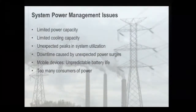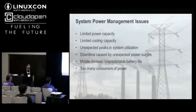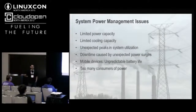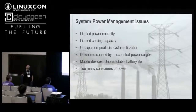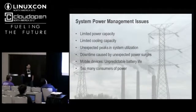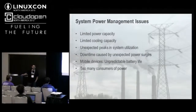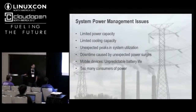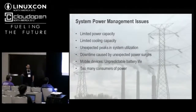So what are the system power management issues in general? We have limited power capacity and limited cooling capacity — both limited by financial or physical constraints. Systems can have unexpected power peaks and swings that can trip circuits or bring down systems. In mobile devices there is unpredictability of battery life. Also, there are too many consumers of power: if you add up the total ratings of each component, you get a lot of over-budgeting, and if all consumers turn on at the same time, the system cannot handle it.